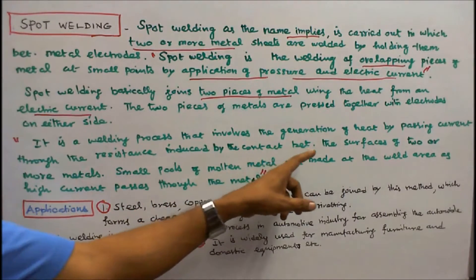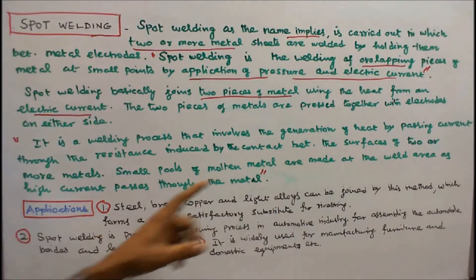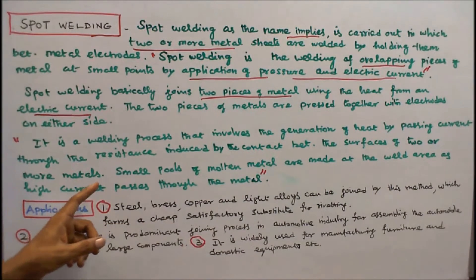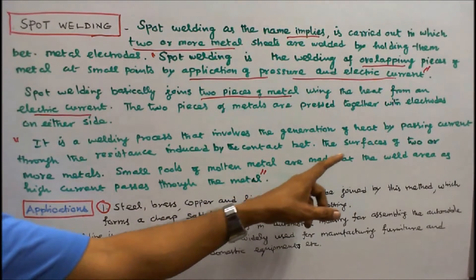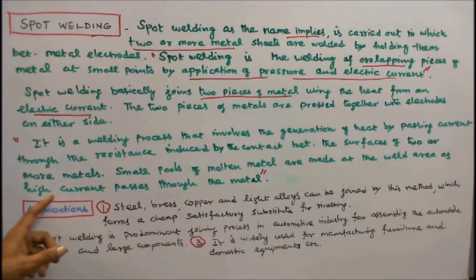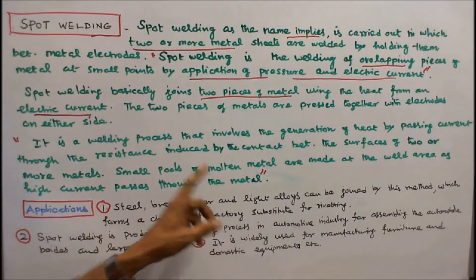Small pools of molten metal are made at the weld area as high current passes through the metal.